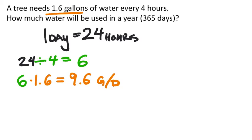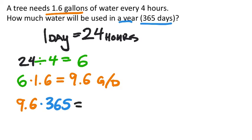That's how many gallons per day the tree needs. This happens for 365 days, which is a year. So take 9.6 and multiply by 365 in the calculator. Enter — 3,504 gallons in the year.